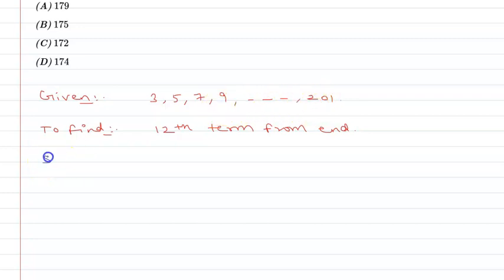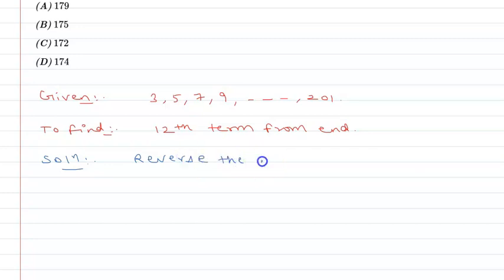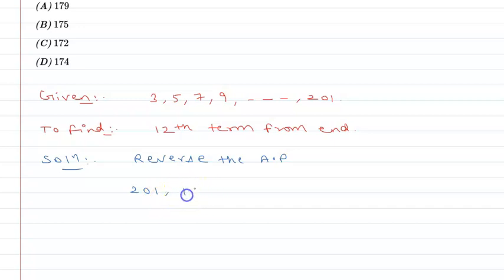So what I will do is reverse the terms. After reversing, the sequence starts with 201, 199, 197, and so on. As I see, the original terms were increasing, so after reversing, they will decrease.